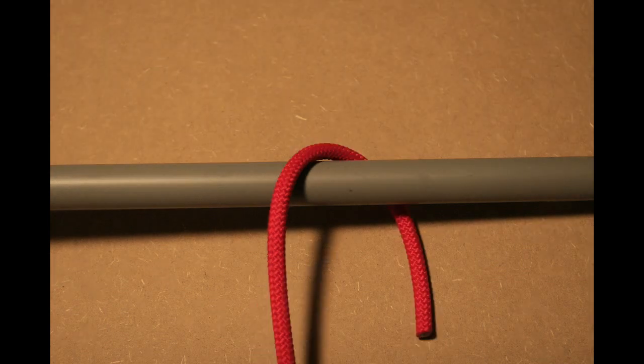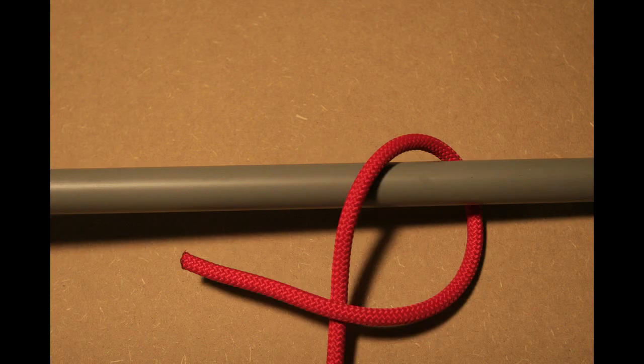Take the working end of the rope and lead it around the object. Then cross over the standing part of the line. That's the part of the line that disappears at the bottom of the video.